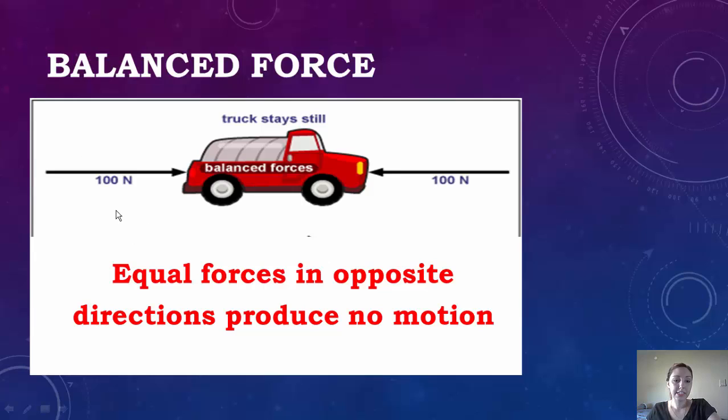So first we're going to look at balanced forces. When you have 100 newtons on this side and 100 newtons on this side, you're going to have a balanced force. So equal forces in opposite directions produce no motion. You can see here that the truck is standing still, and that's because it has balanced forces acting upon it.